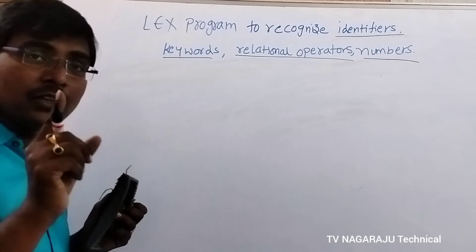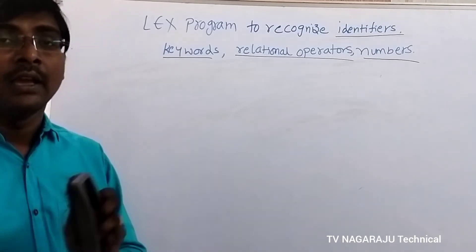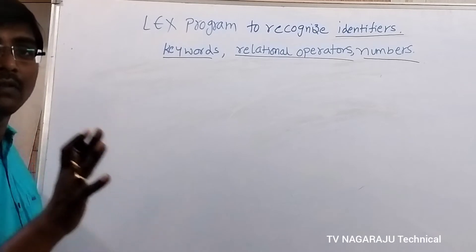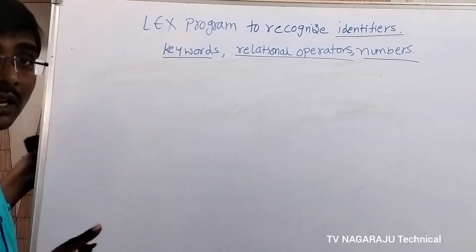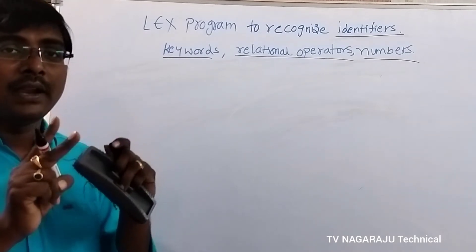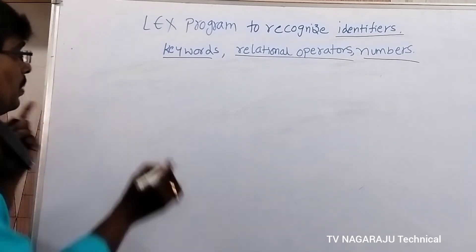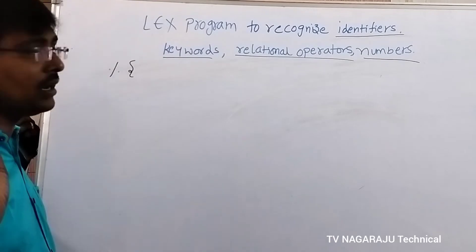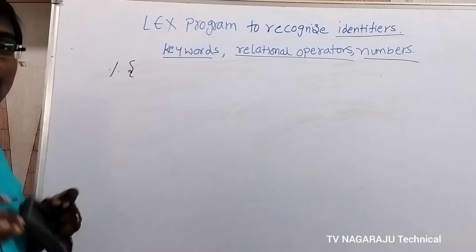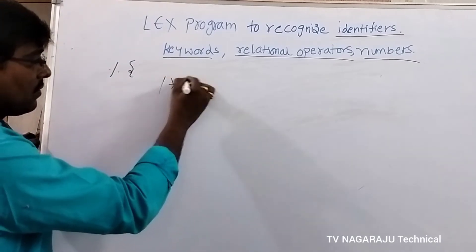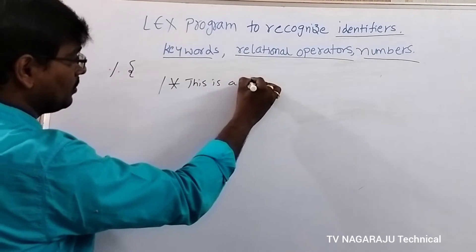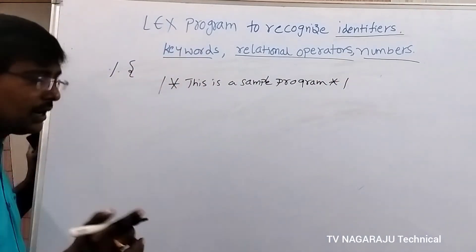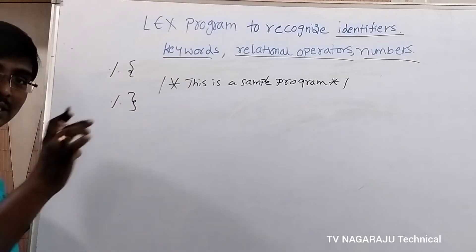The first step is the declaration section, where variables, constants, and regular expressions are declared. Everything is declared in the declaration section, enclosed between %{ and %}. For this example I do not need any variable, so I will simply write a comment: 'This is a sample program to recognize tokens.' This comment is then closed. This is the declaration part.